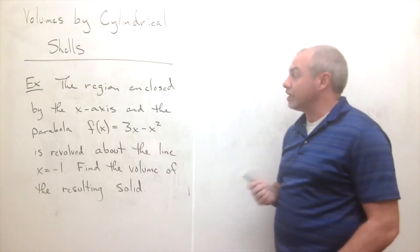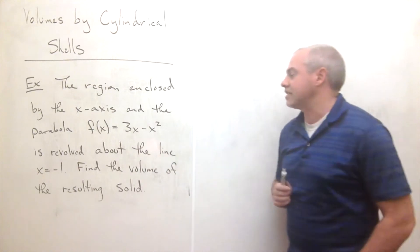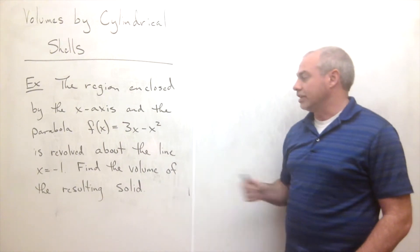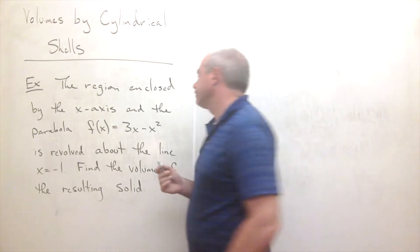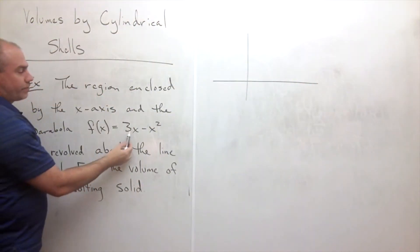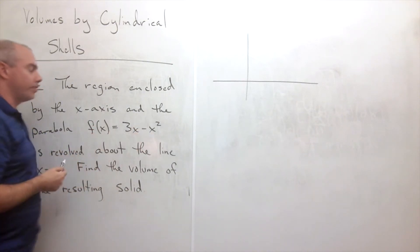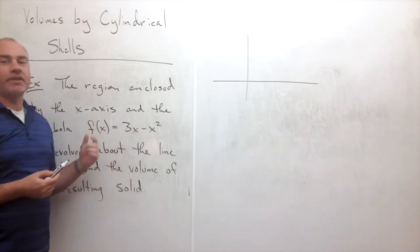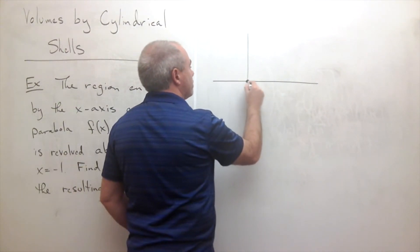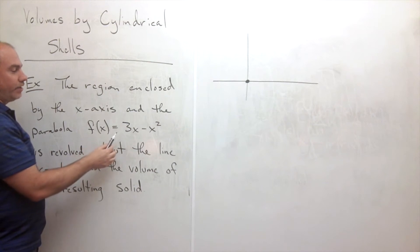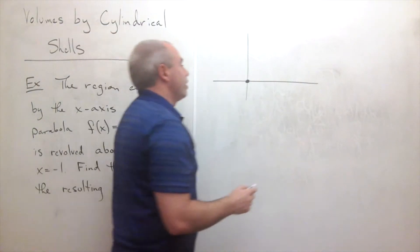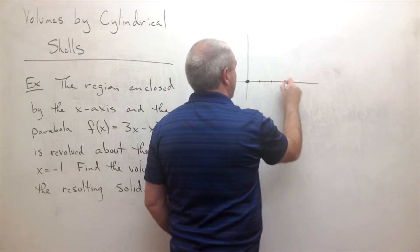The example says: the region enclosed by the x-axis and the parabola f(x) = 3x − x² is revolved around the line x = −1. Let's find the volume of the resulting solid. Let's draw the picture first. We've got f(x) = 3x − x². If x = 0, then y = 0, so (0, 0) is on the curve. If x = 3, then 3·3 = 9 minus 3² = 0, so (3, 0) is also on this parabola.